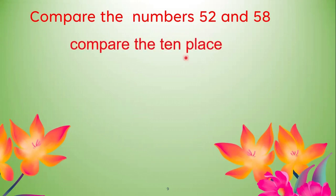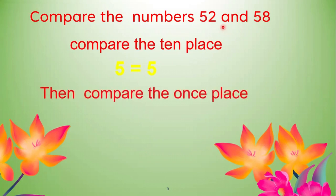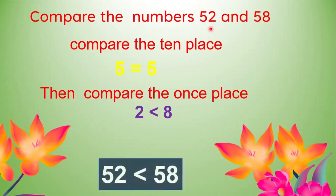First, compare the tens place: 5 is equal to 5, so they are the same. Then compare the ones place: 2 is less than 8. So 52 is less than 58. Therefore, 52 comes before 58 — that is ascending order.